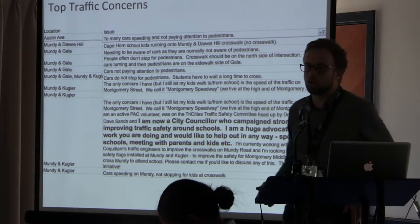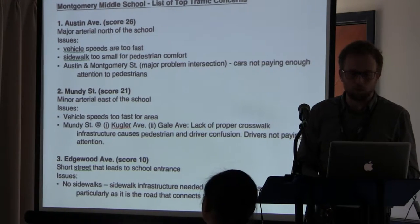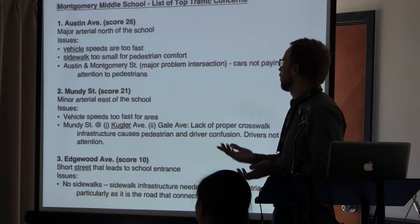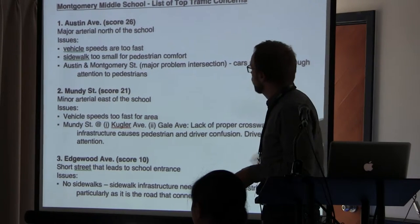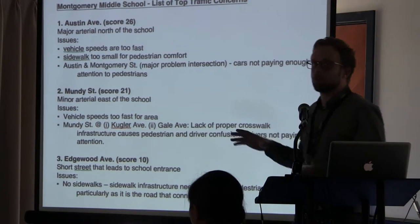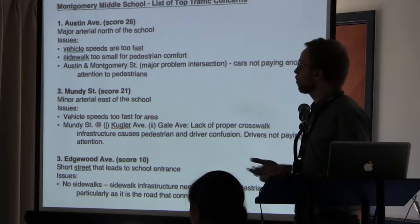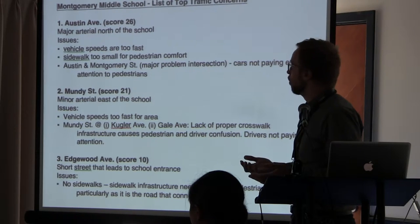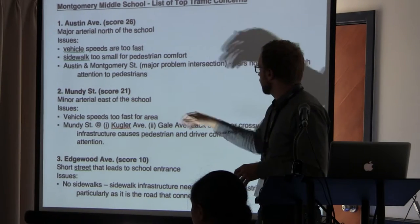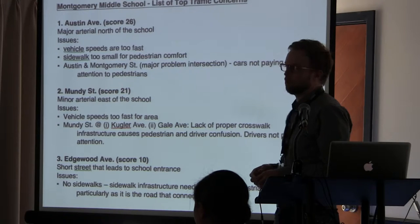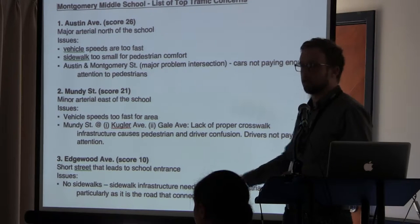In this case we had about 200 responses, consolidated down to a top-ten list — or more or less — of the top traffic concerns from those family surveys for Montgomery Middle School. Austin Avenue got the highest score of 26 — a major arterial north of the school — with issues around vehicle speeds, sidewalks being too narrow, and one intersection where cars aren't paying enough attention to pedestrians. Mundy Road scored 22, Edgewood Avenue scored 10, and so on down the list.